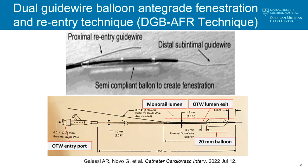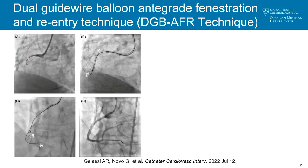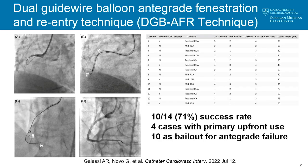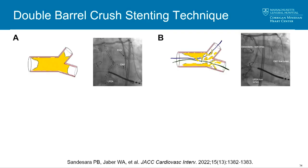Galassi et al have developed a device where the balloon and wire can be used on the same system: a semi-compliant balloon is inflated in the subintimal space on the RX portion, and there is an over-the-wire port where you can use your re-entry wire. Published in CCI just last week, they found a 71 percent success rate in 14 cases — four with primary upfront usage, ten as bailout for antegrade failure.